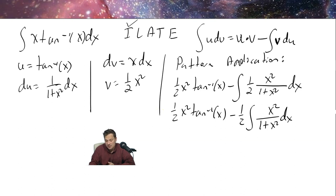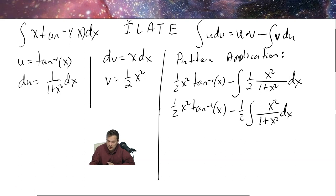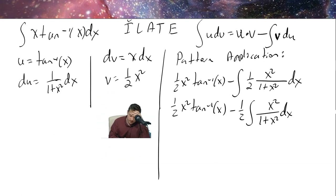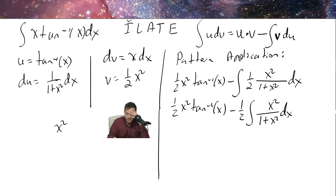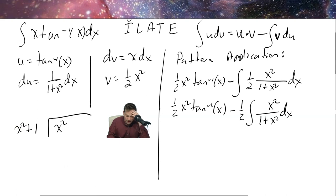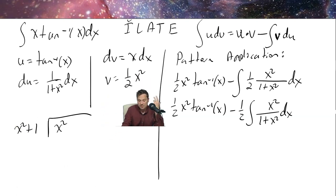If you try u-substitution on x² / (1 + x²) it won't be easy, so instead we divide. As side work, we perform polynomial long division: x squared divided by (1 + x squared). Since the denominator is 1 + x², we can rewrite it as x² + 1 and carry out the division.